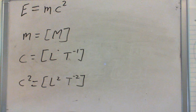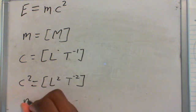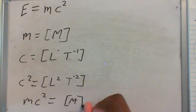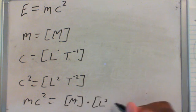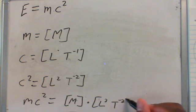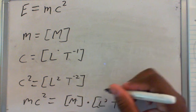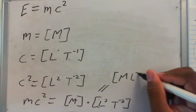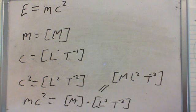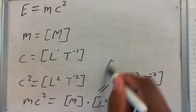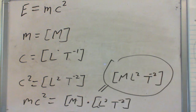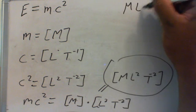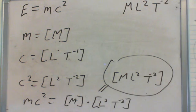So we know that MC squared equals M times L squared over T squared. And this equals M times L squared over T squared. So MC squared equals this. Let's put this up here, this is for reference.